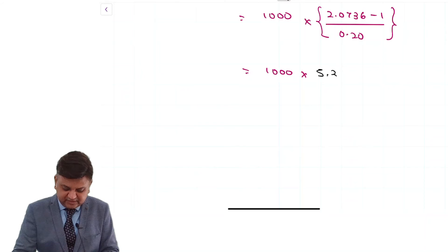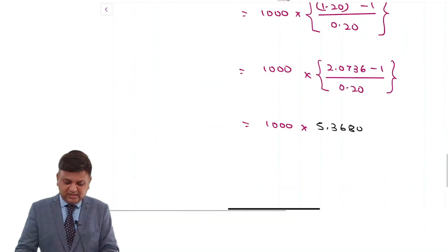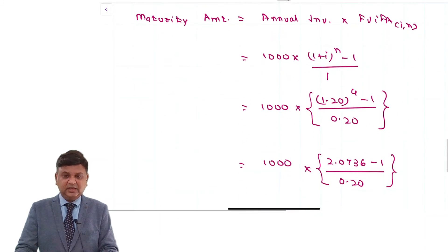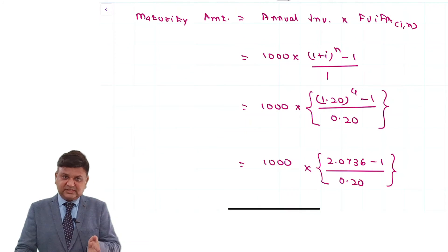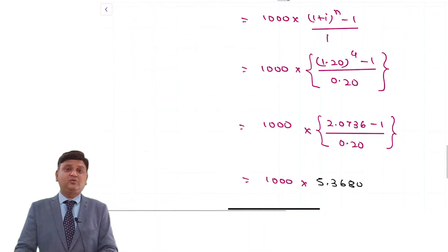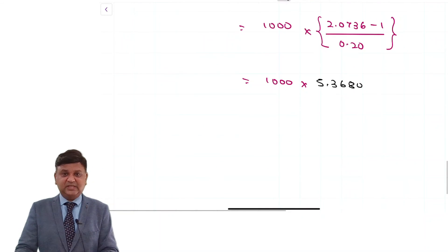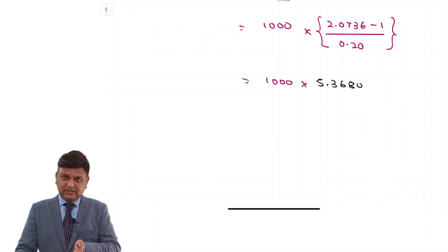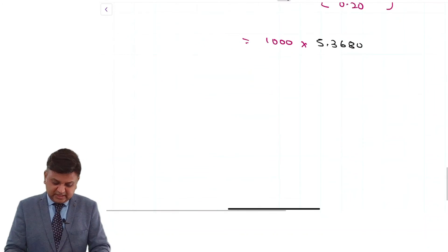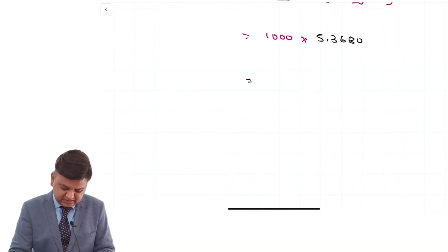What do we understand with the term 5.368? It means that if at all 1 Rupee is invested on annual basis from end of year 1 to end of year 4, the maturity amount of deposit will be 5.368. So 5.368 into 1000 that comes to Rs. 5368.